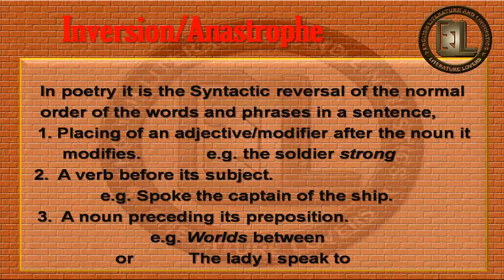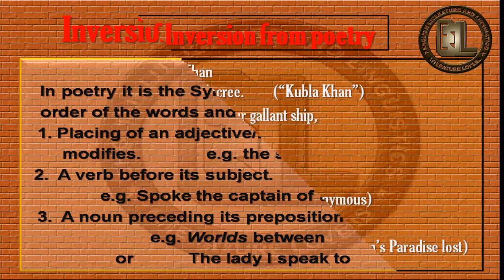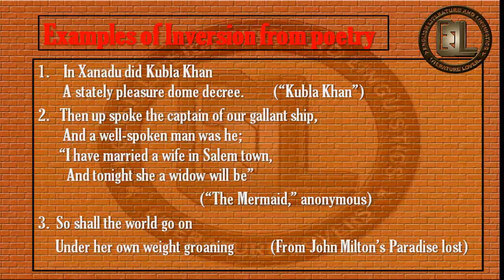Some examples of inversion from poetry are: Number 1, these first two lines from Kubla Khan by Coleridge — 'In Xanadu did Kubla Khan a stately pleasure dome decree.' Number 2, lines from the poem 'Milded' by Anonymous — 'Then spoke the captain of her gallant ship, and a well-spoken man was he. I have married a wife in Salem town, and tonight she a widow will be.' Number 3, lines from Paradise Lost by John Milton — 'So shall the world go on under her own weight groaning.'